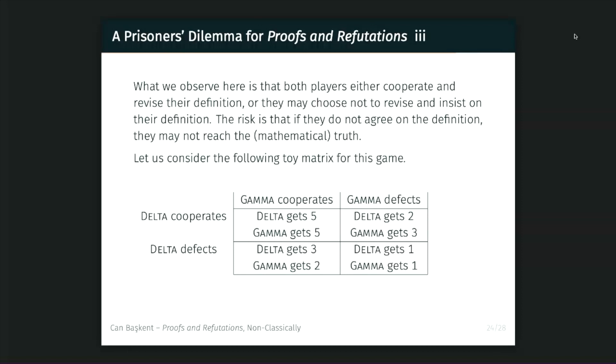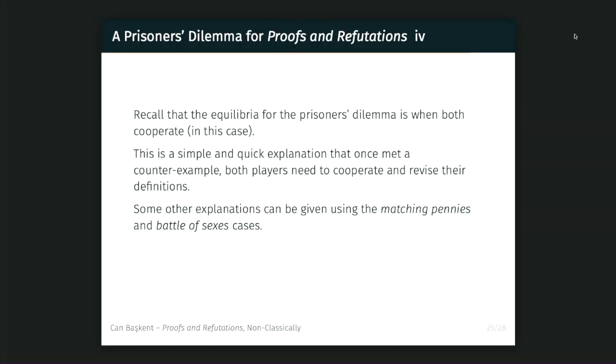Players have two options: cooperate or defect, for both Delta and Gamma. If both cooperate, it's good for both — they get the highest payoff. However, if they both defect — if neither recognizes the counterexample and monsters it out — they will narrow down their domain and get the least possible payoff for both. However, if one cooperates and the other does not, the cooperating one will advance more than the other, but not as far as both cooperating together. The reason is because just one of us cooperating and not convincing the opponent is less valuable than both of us acknowledging the counterexample and benefiting from it.